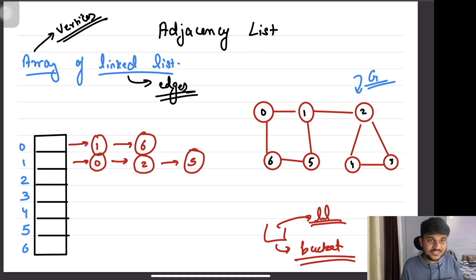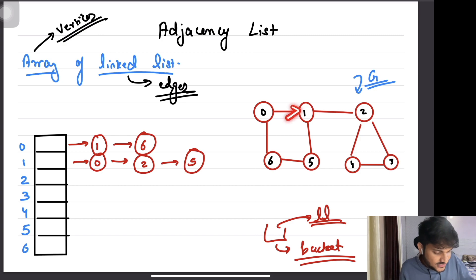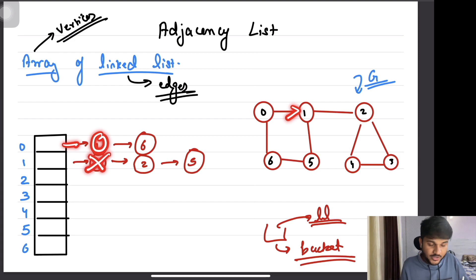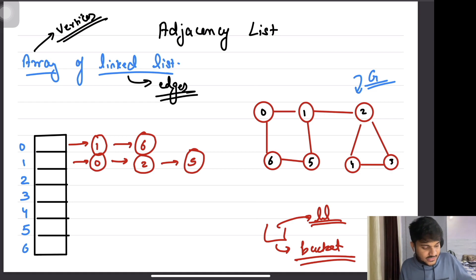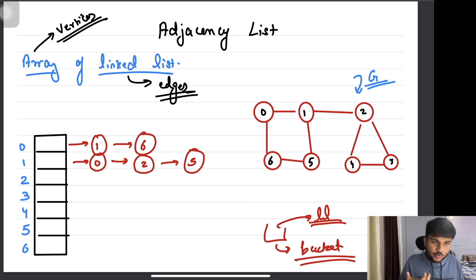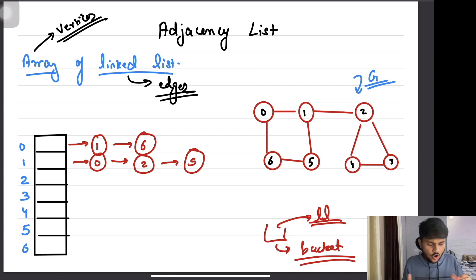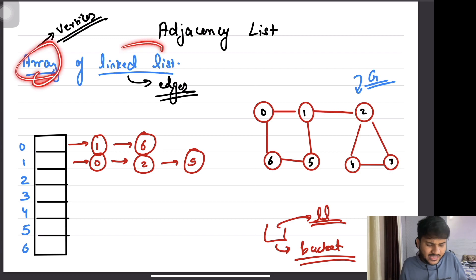For a directed graph, if 0 is directed towards 1, then we will have an entry of 1 inside 0's list but there will be no entry of 0 inside 1's list. These linked lists are not in any particular order — when you take the input of the edges, you can add the vertices one by one. Now, why are we keeping a linked list here? How about using an array of arrays instead? There are some huge advantages associated with linked lists.